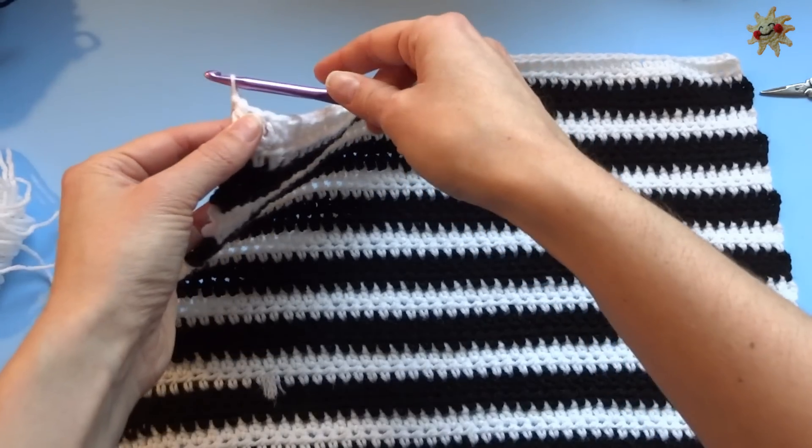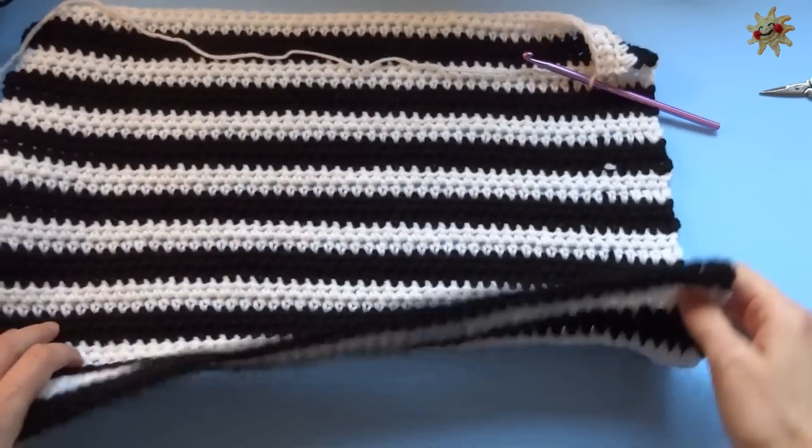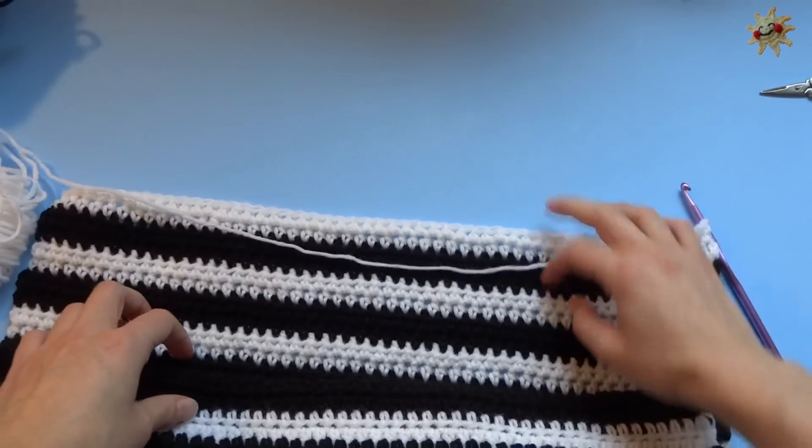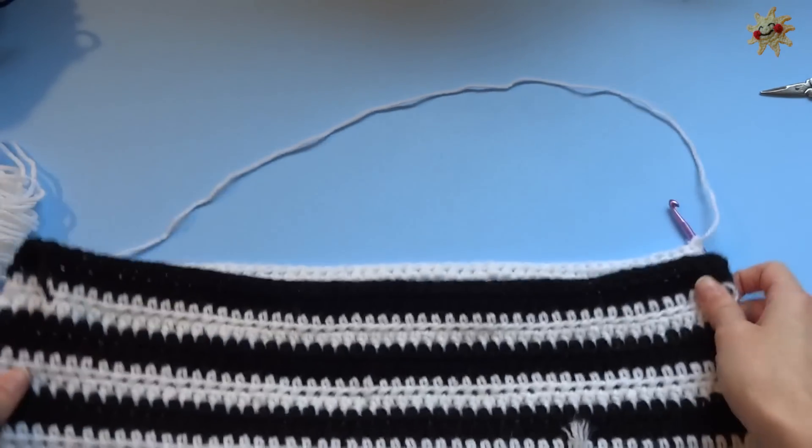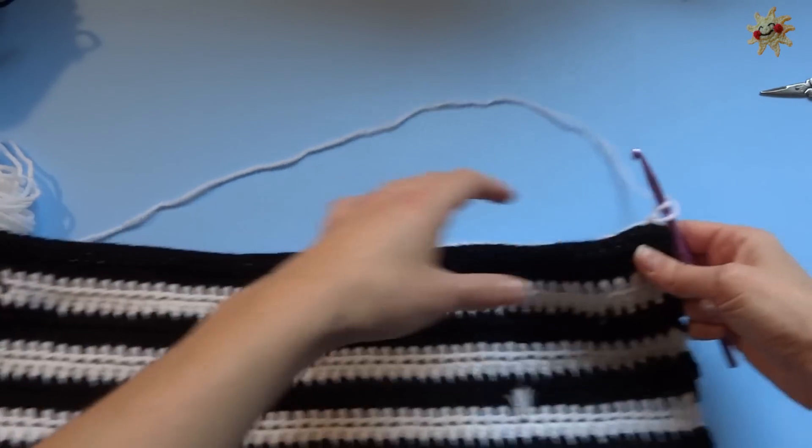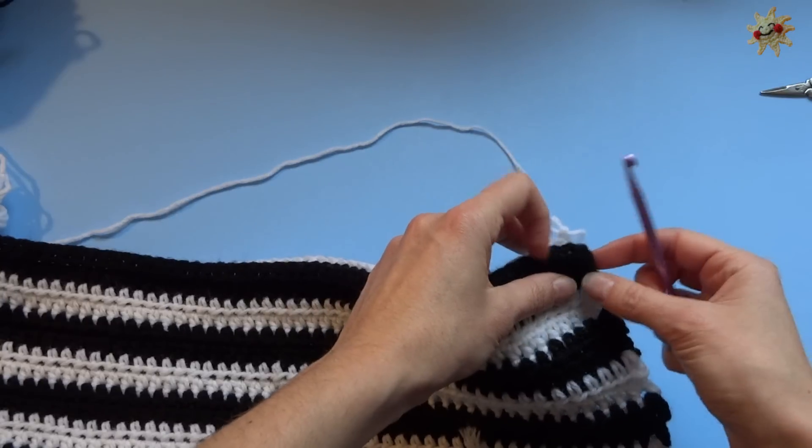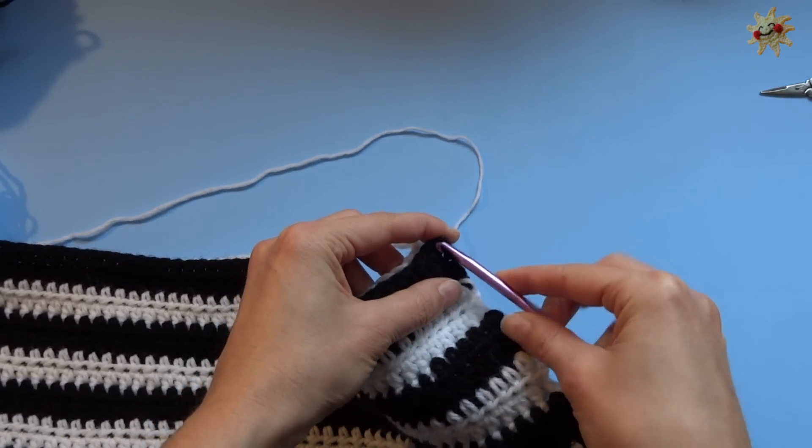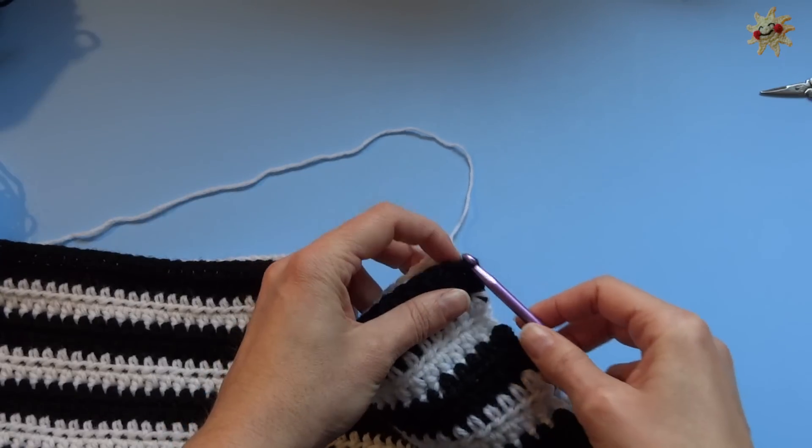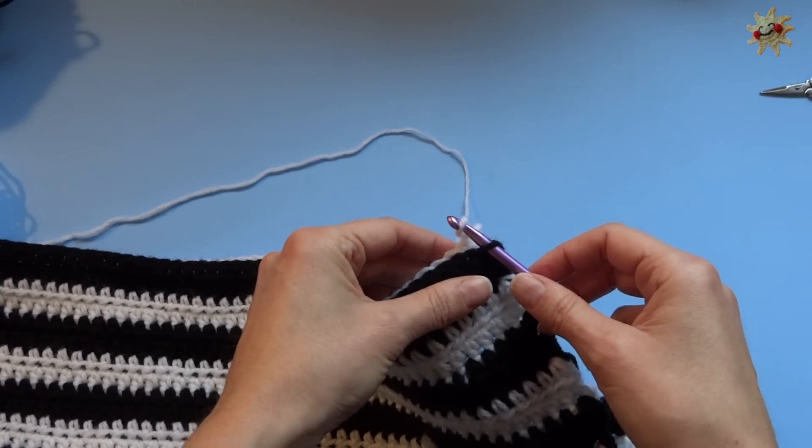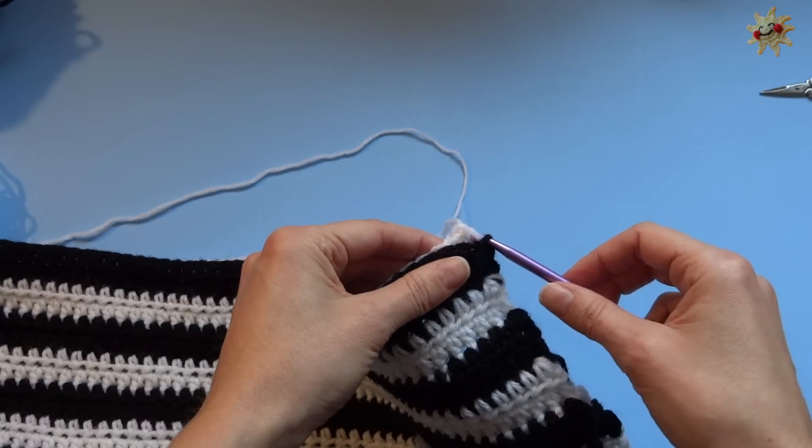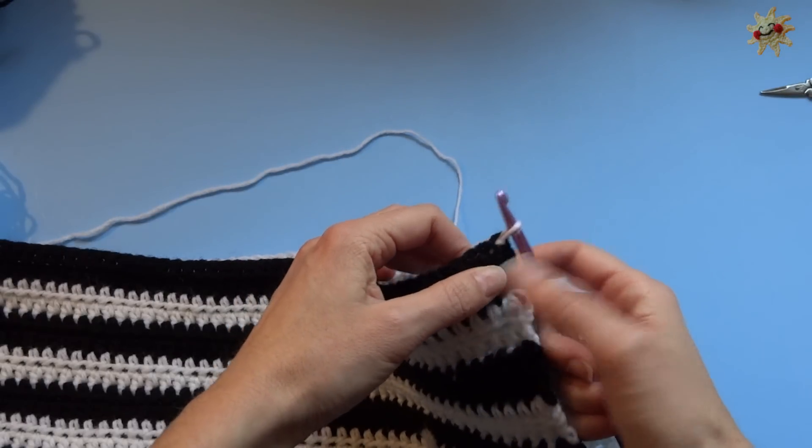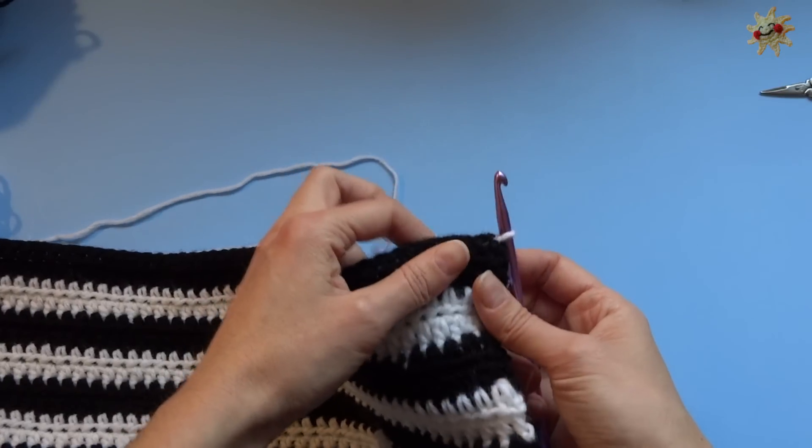So you can chain one, flip your work, bring your bottom row up to meet your top row. And I like to do this. So I take my hook and I put it through the very edge corner of my top row, grab that chain one, and pull it through. And now I can work on this side.